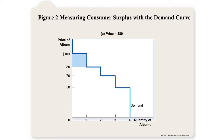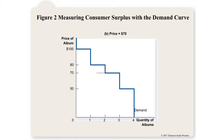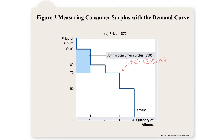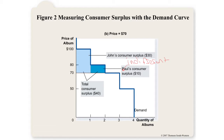If the price is $80, only John will purchase the album — he's willing to pay $100 but pays $80, collecting $20 in consumer surplus. If the price falls to $70, John's surplus increases from $20 to $30. George, who is willing to pay exactly $70, is indifferent — meaning if willingness to pay equals price, you get no consumer surplus. Paul, who wasn't in the market before, enters and gets $10 in consumer surplus, giving a total consumer surplus of $40.